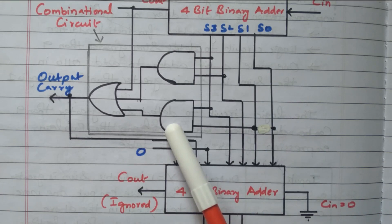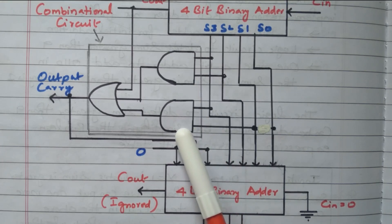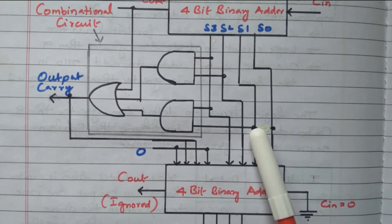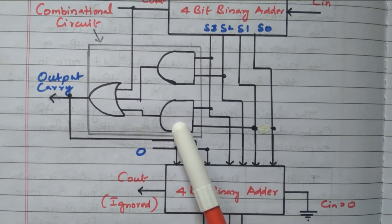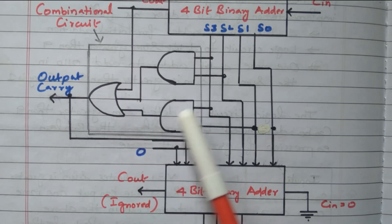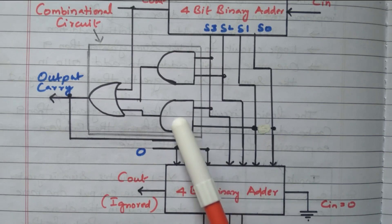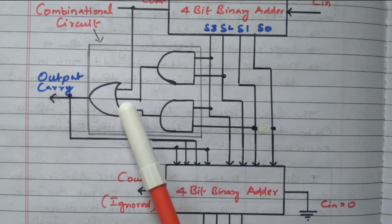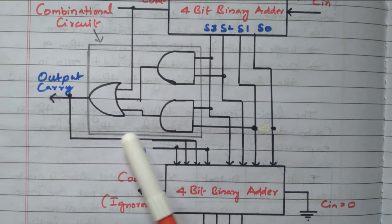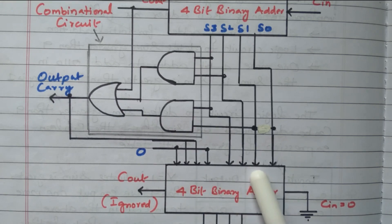One condition is C out. Another condition is greater than nine. Greater than nine is determined from the truth table using the K-map; we got the simplified expression: S3·S2 + S3·S1. For that, we have two AND gates. One AND gate is connected with S3 and S2, so the output is S3·S2. Another AND gate has S3 and S1 connected, so the output is S3·S1. Both are ORed together. If all are high, the AND gate output is high, and the OR gate output is also high, giving us 0, 1, 1, 0 — the decimal equivalent of six — which is added with the answer.